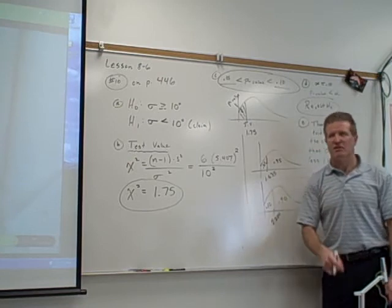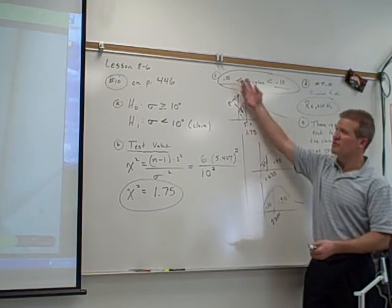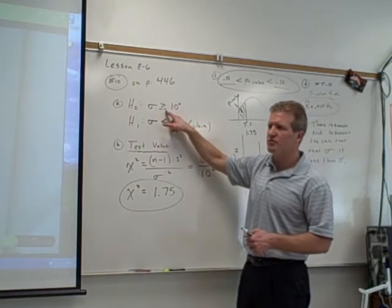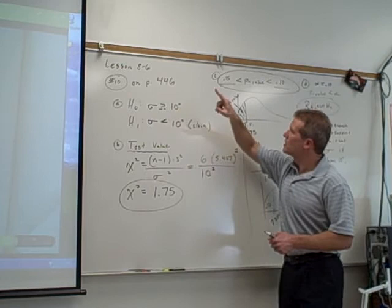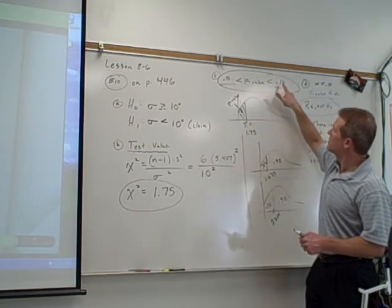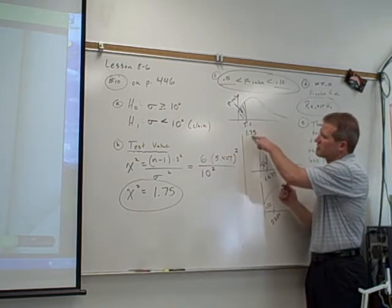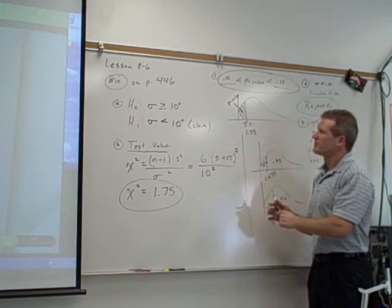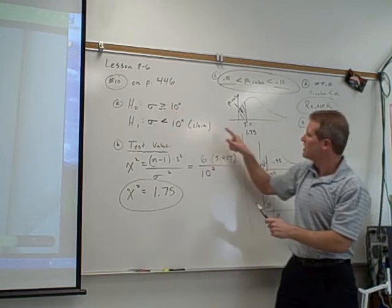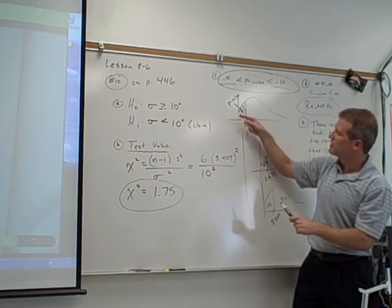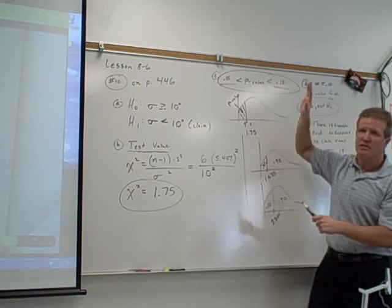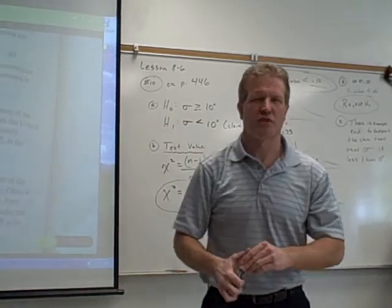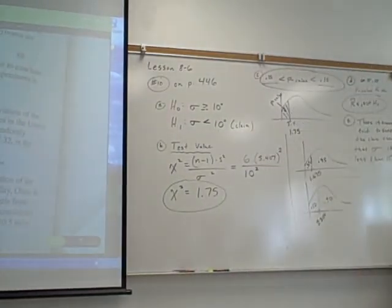Another thing you might get asked about is what does the p-value mean? What that means is that if the null really is true, there's somewhere between a 5% and a 10% chance that we would have gotten this test value or a more extreme test value. The chances, if this null is true, the chances of getting this or one that's even lower are somewhere between 5% and 10%. Those are the probabilities. Let's check that off.